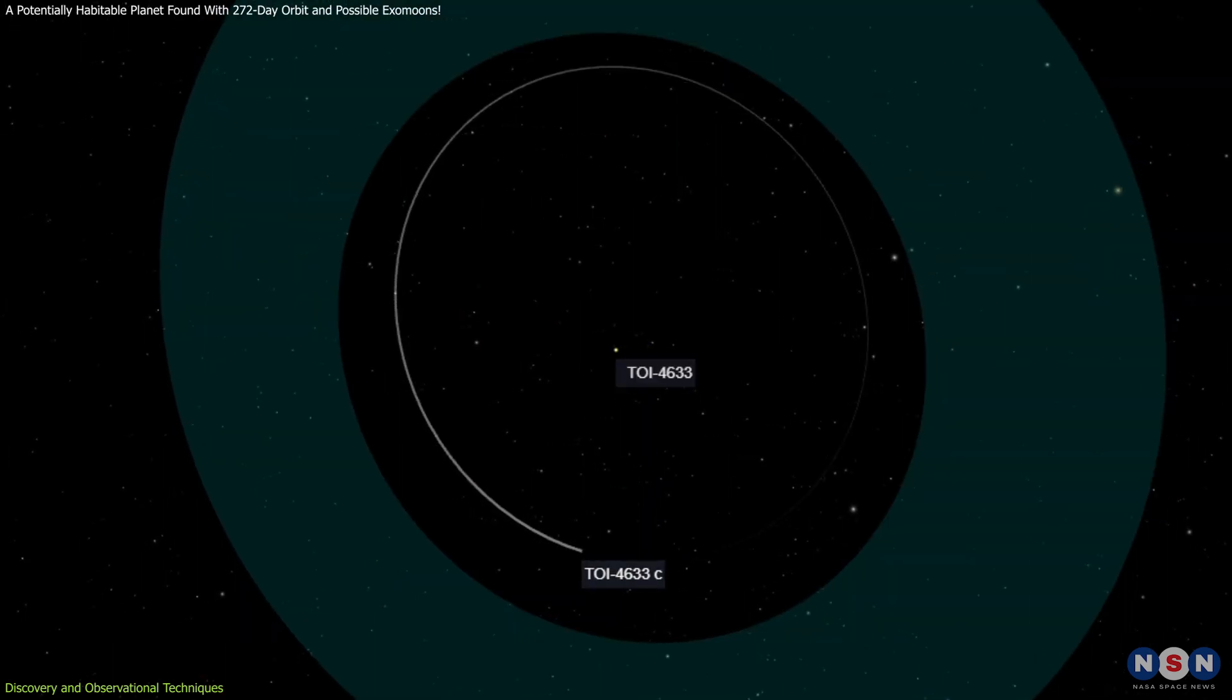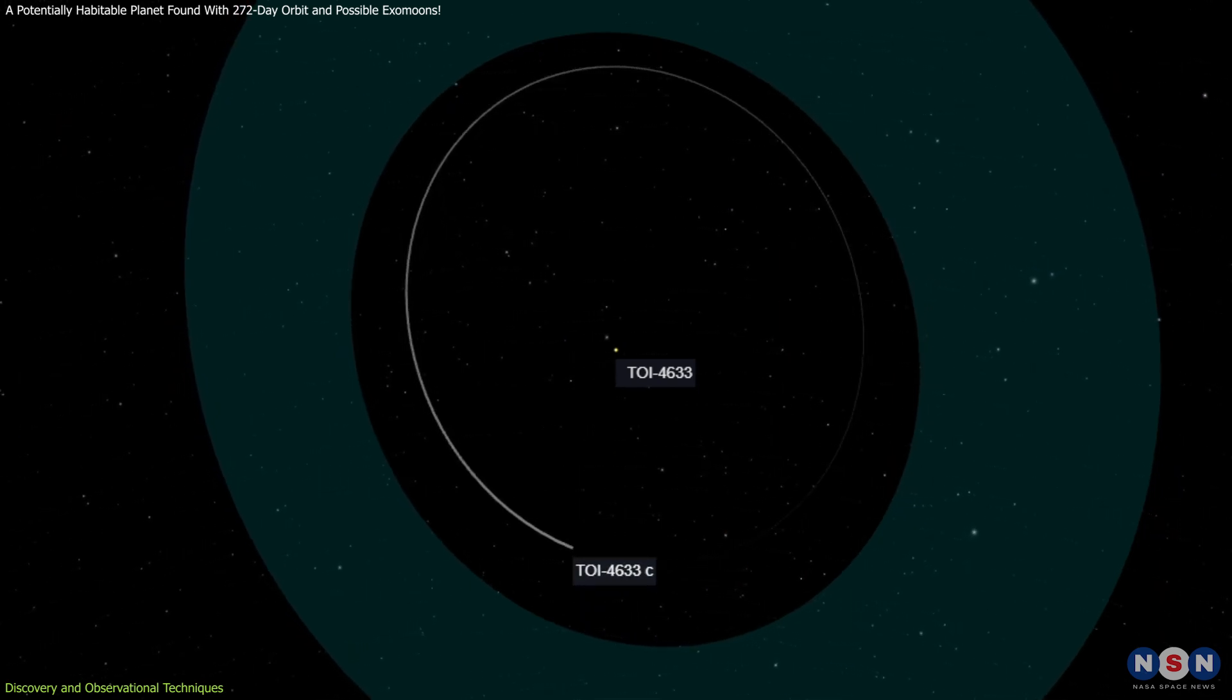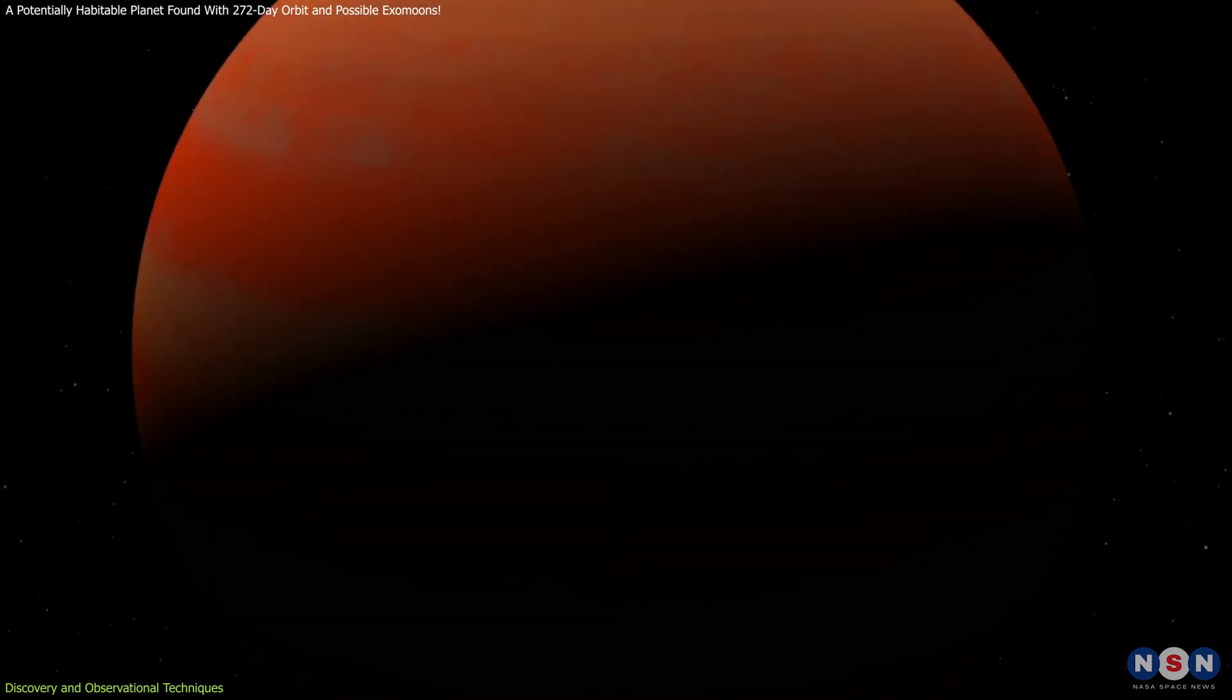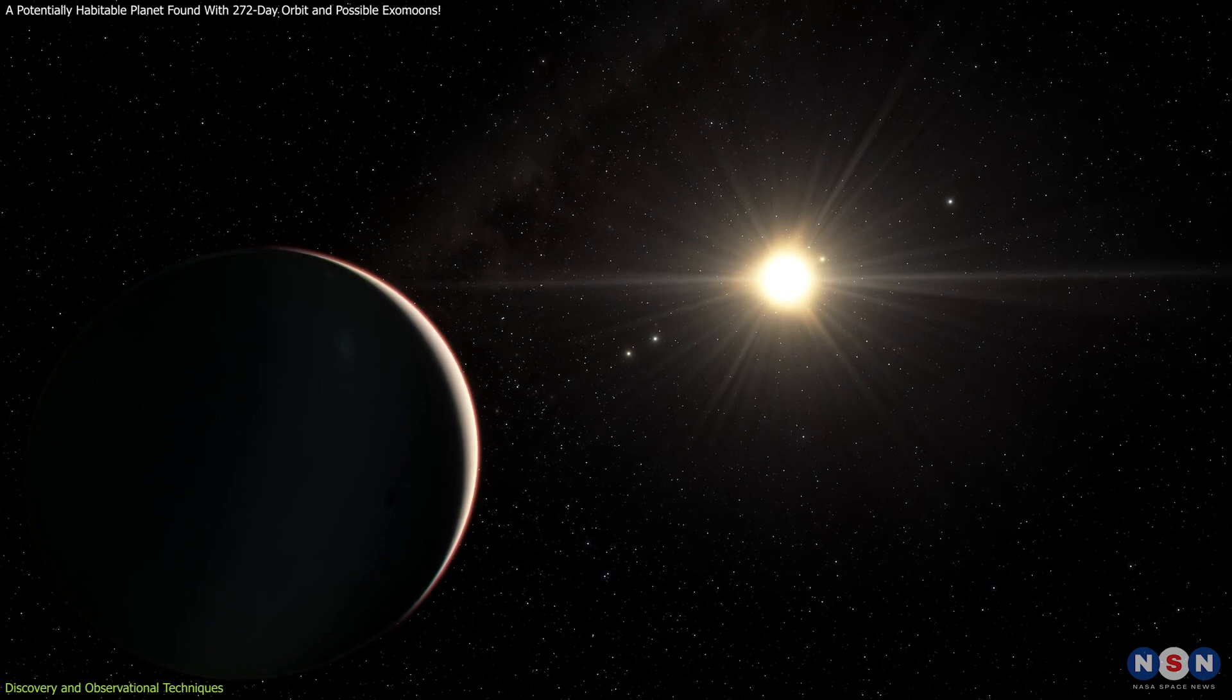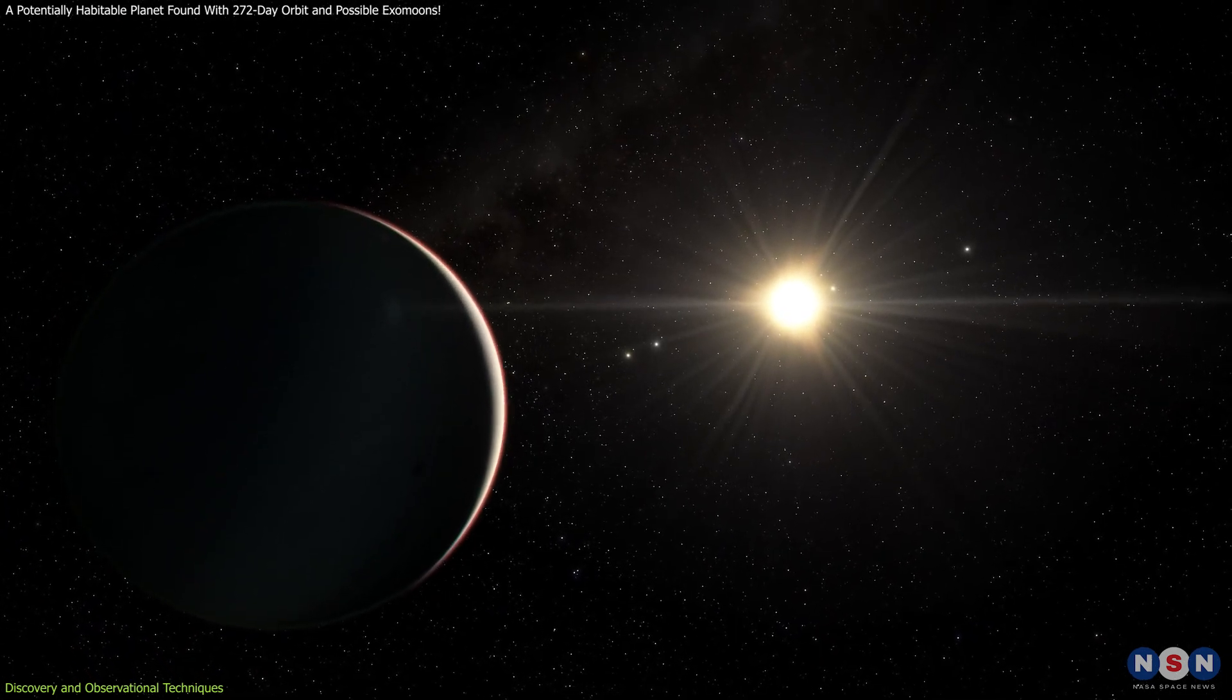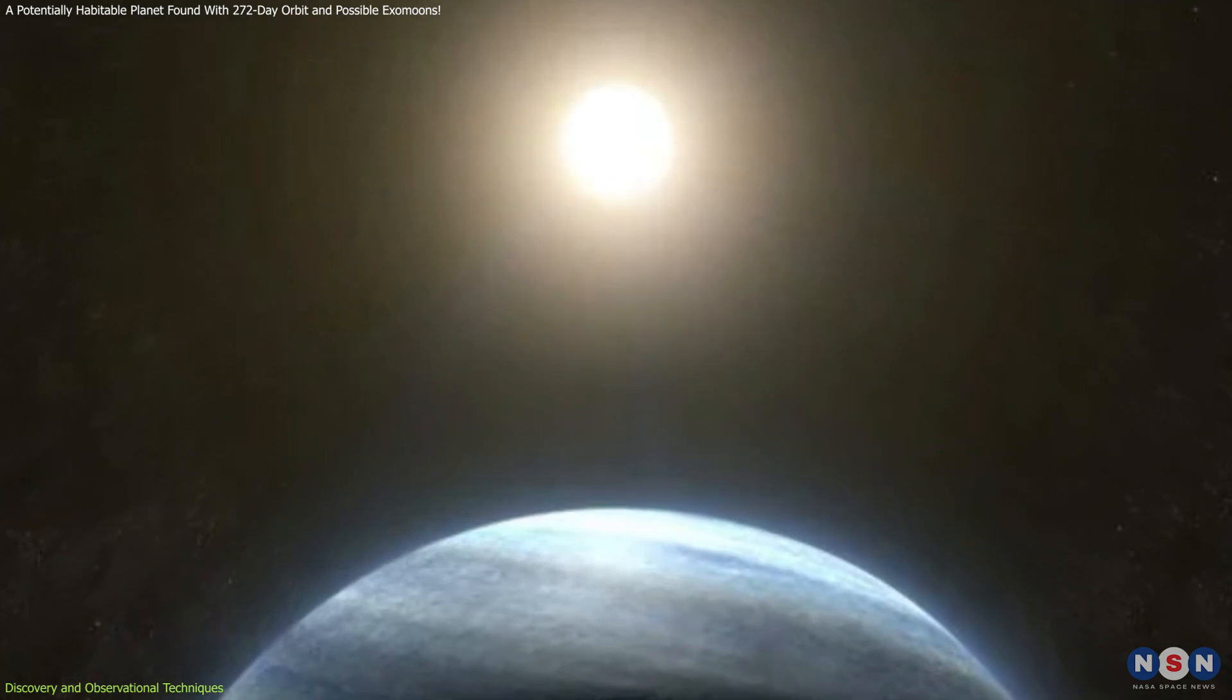However, this Neptune-like planet stands out due to its exceptionally long orbital period of 272 days, making its detection a significant achievement. The discovery process was rigorous. After citizen scientists flagged the potential planet, professional astronomers conducted follow-up observations to confirm its existence.